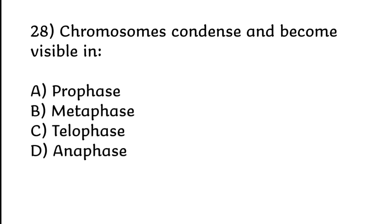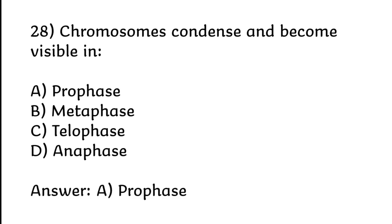Chromosomes condense and become visible in: A) Prophase, B) Metaphase, C) Telophase, D) Anaphase. Correct answer is option A: Prophase.